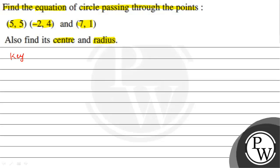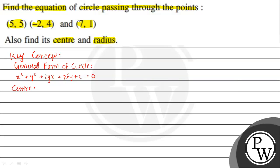The key concept to solve this question is the general form of a circle, given by x² + y² + 2gx + 2fy + c = 0. The center coordinates are given by (-g, -f), and the radius is equal to the square root of g² + f² - c.